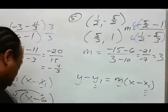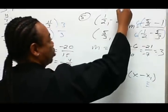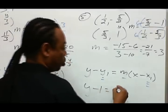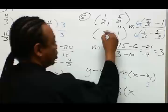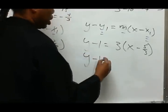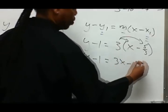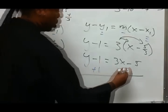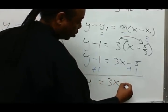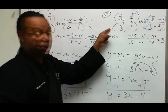The opposite of y using this point is negative 1. The slope is 3, and the opposite of x is negative 5 thirds. Distributing 3 gives 3x minus 5. Then adding 1 to both sides, we get y equals 3x minus 4. This is the linear equation that goes through these two points.